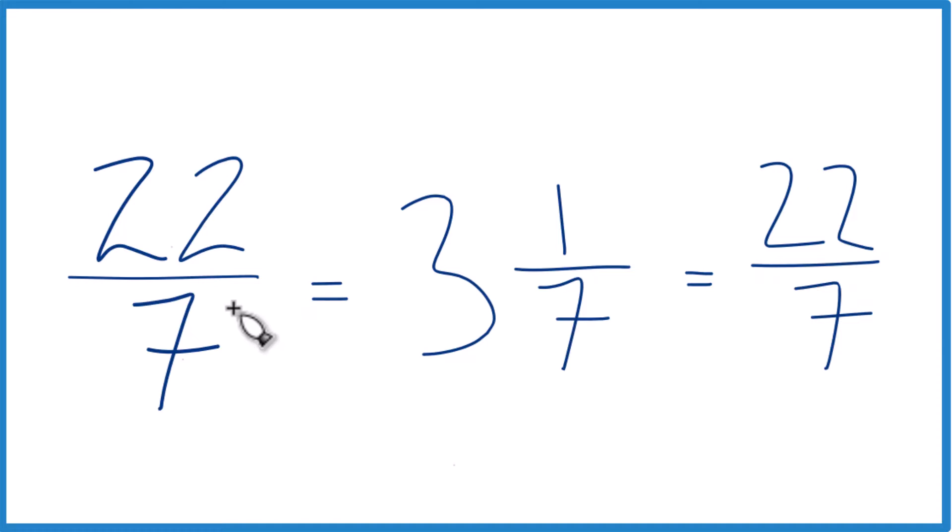This is Dr. B. Writing 22 sevenths as a mixed number. The answer, 3 and 1 seventh. Thanks for watching.